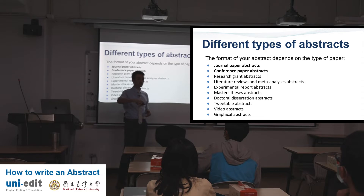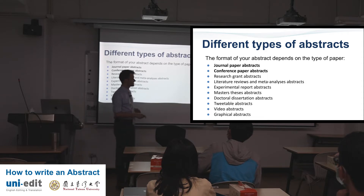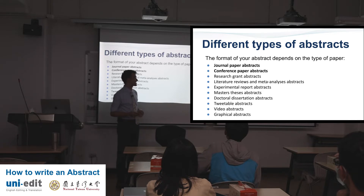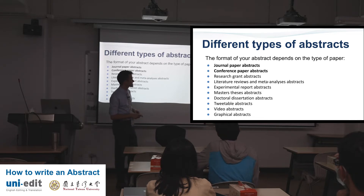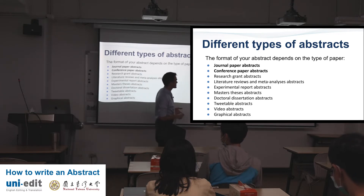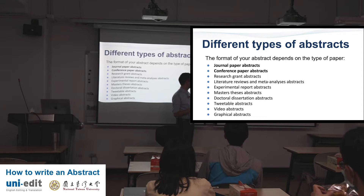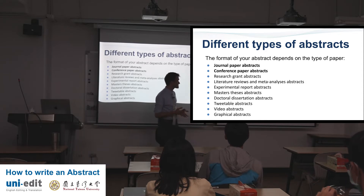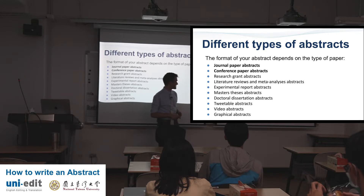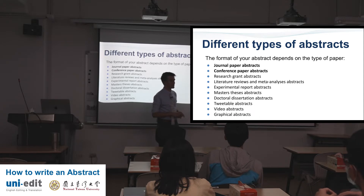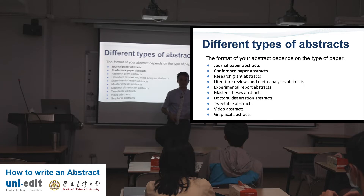Here are the different types of abstracts. If you continue with your academic career, you may write most of these in different papers — be flexible with yourself. The most two common are journal paper abstracts and conference paper abstracts, but then you can write research grants, literature reviews, experimental reports, master's thesis abstracts, doctoral dissertation abstracts, tweetable abstracts, video abstracts, and graphical abstracts. They all do the same thing: representing your work in few words.